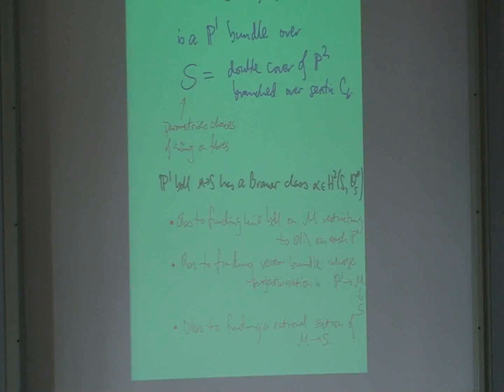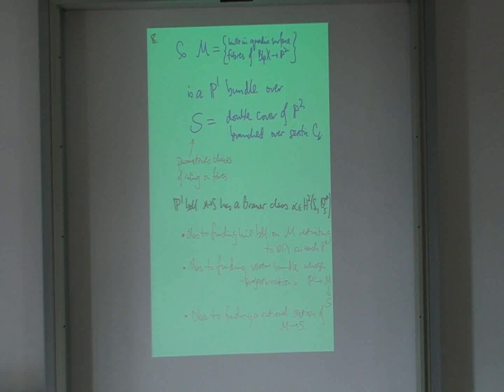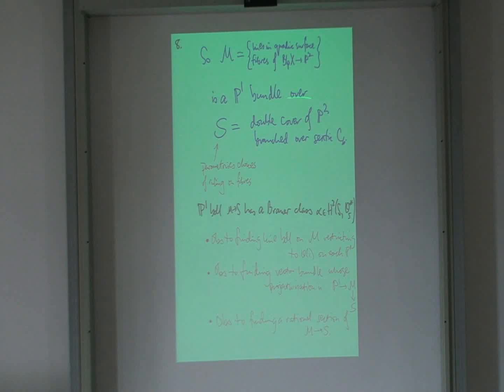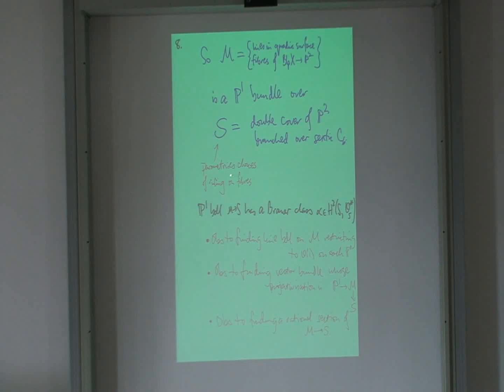So I have this moduli space over my P2, right, which is generically two disjoint P1s. And then those collapse into one P1 over the discriminant. And so, you know, that defines a double cover of P2 branched over the sextic. Okay? So the double cover is where I pick a choice of a ruling. So I don't separate, I don't consider all these lines in one ruling to be different. If I choose a ruling, I have two choices of ruling generically. And I only have one choice of branch like this. So this choice of ruling gives me a double cover of P2, and that's my K3 surface.